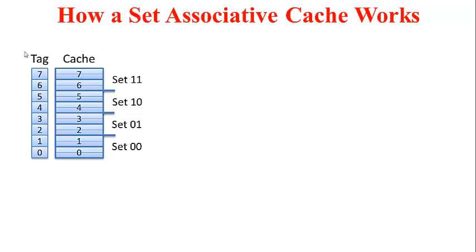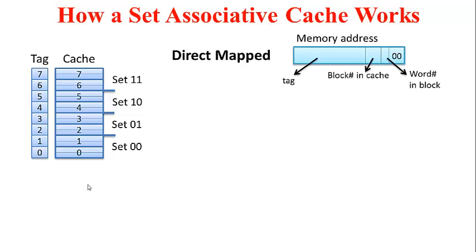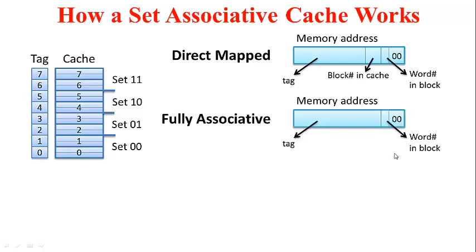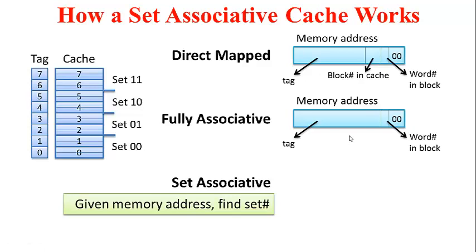In a set associative cache, we divide the cache into multiple sets, and each set consists of several blocks, with each block able to hold many words. Given a memory address, the cache controller needs to find the set number in which that particular memory address can potentially reside. Corresponding to this, the memory address has a field for set number in cache, in addition to the word number in block field, with the remaining MSB bits as the tag.